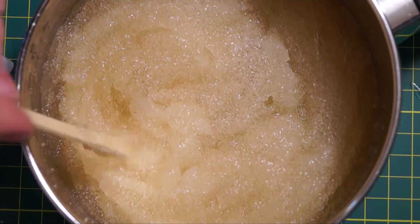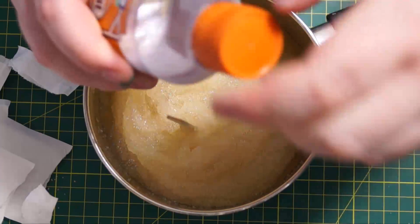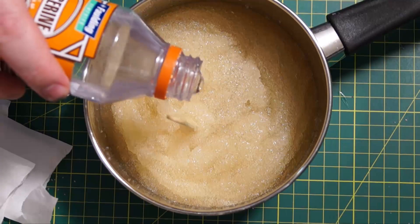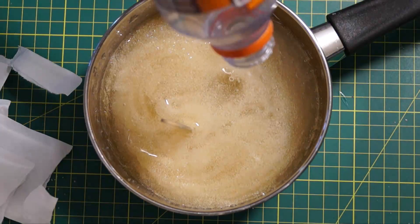And into that we are now going to pour the glycerin. So you can see that the popsicle stick is remaining standing up. That gives you an idea of the consistency of this. Now we're going to add in the 200ml of glycerin.